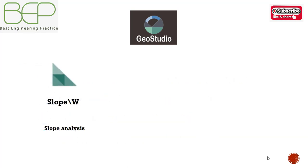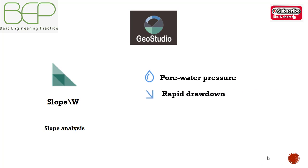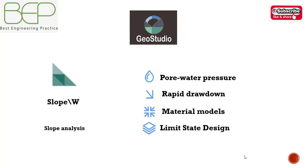SLOPE/W is the leading slope stability software for soil and rock slopes. Pore pressure can be defined using piezometric lines, spatial functions, or results from a GeoStudio finite element analysis. Rapid drawdown analysis can be conducted using pore pressures defined by piezometric lines, finite elements, or the multi-stage rapid drawdown technique. SLOPE/W supports a comprehensive list of material models and handles limit state design by satisfying partial factors on permanent loads, material properties, reinforcement inputs, and other parameters.